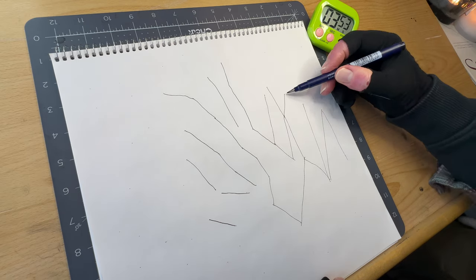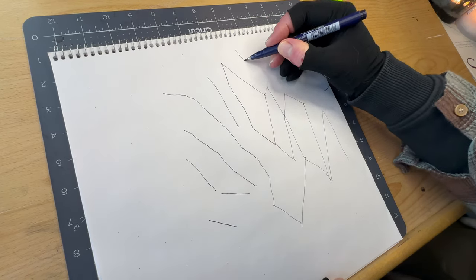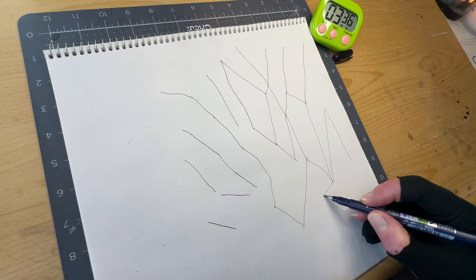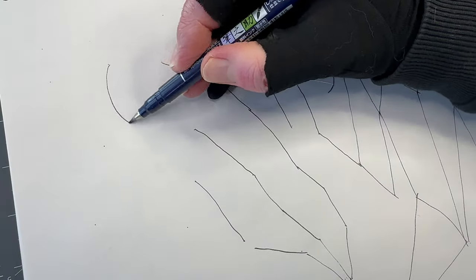The trick is to keep your eyes on the dot you're aiming for. You'll notice your lines become straighter as you go. Midway at the three and a half minute mark, switch to curved lines.